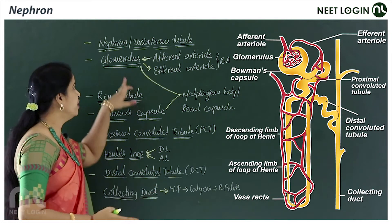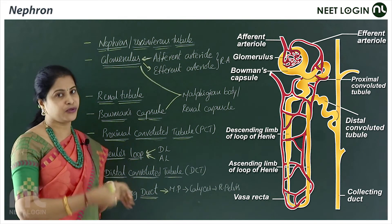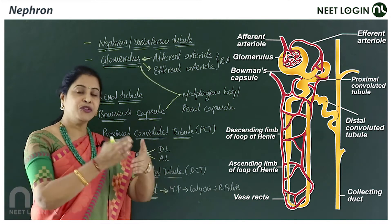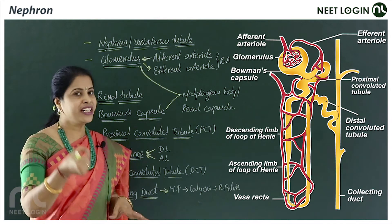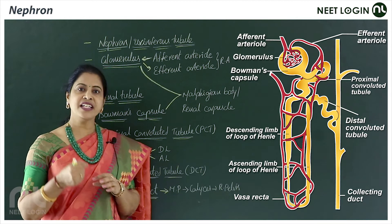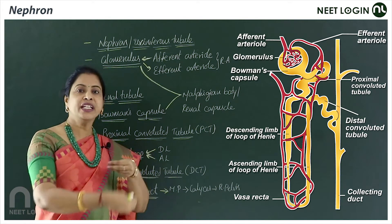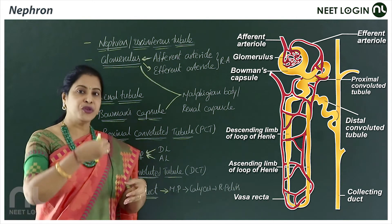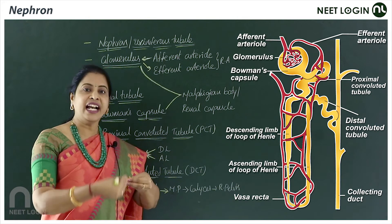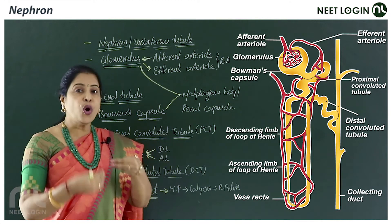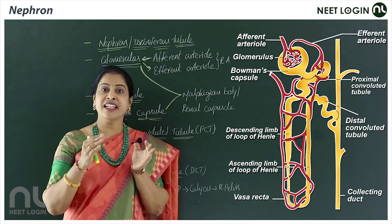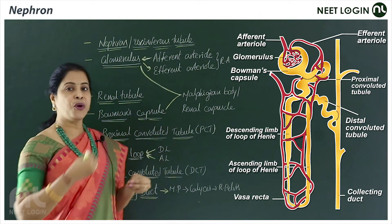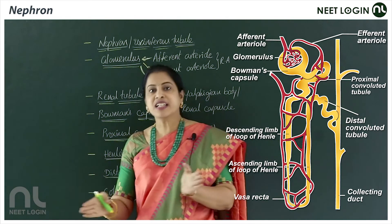The nephron consists of two parts: the glomerulus and the renal tubule. The renal artery is the blood vessel that brings blood to the kidneys for filtration and elimination of waste. The renal artery is rich in urea, as urea synthesized in the liver is brought to the kidneys to be eliminated. Some nitrogenous wastes are stored in the interstitial fluid to maintain osmolarity gradient.